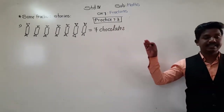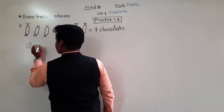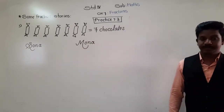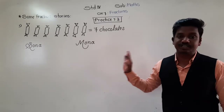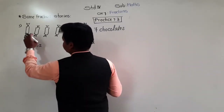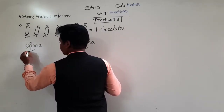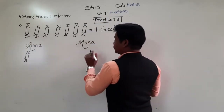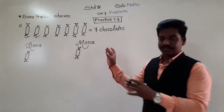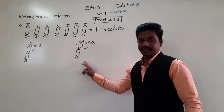Seven chocolates are to be divided equally among two girls. How many chocolates will each get? There are 7 chocolates. Let's give 1 chocolate to Sona, then 1 chocolate to Mona — we are giving like this so that everybody gets equal and there is no partiality.